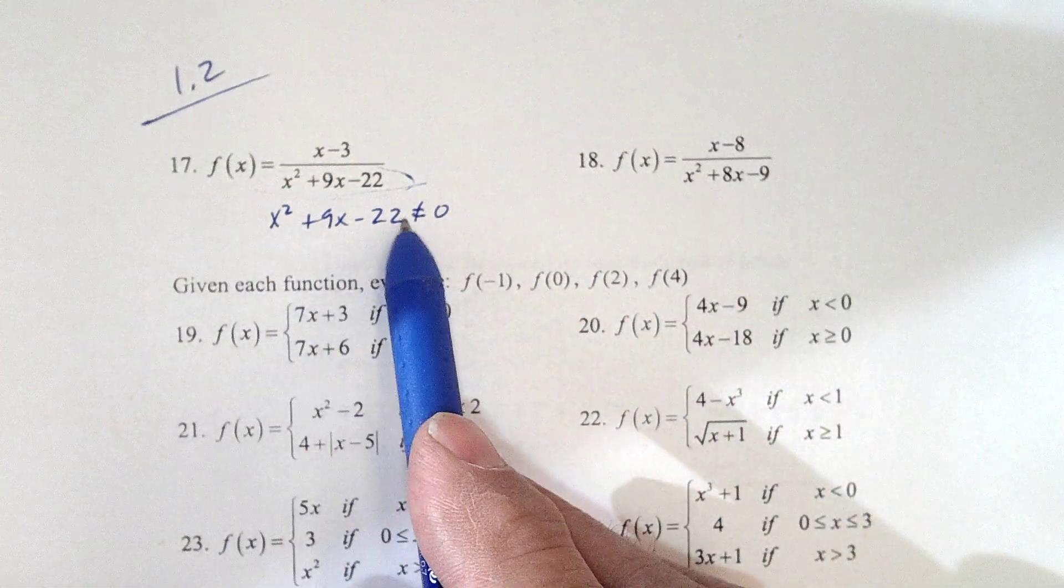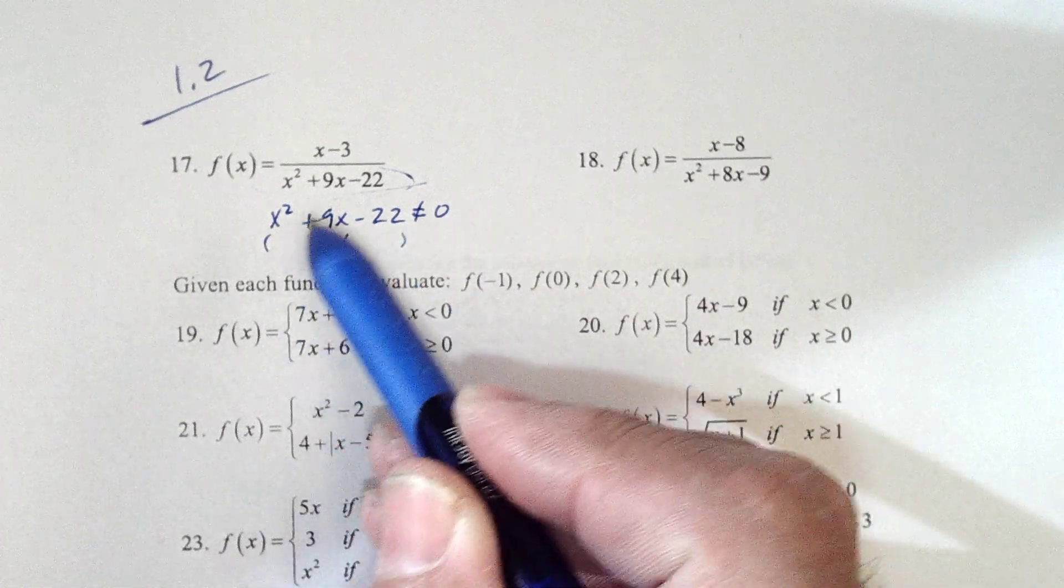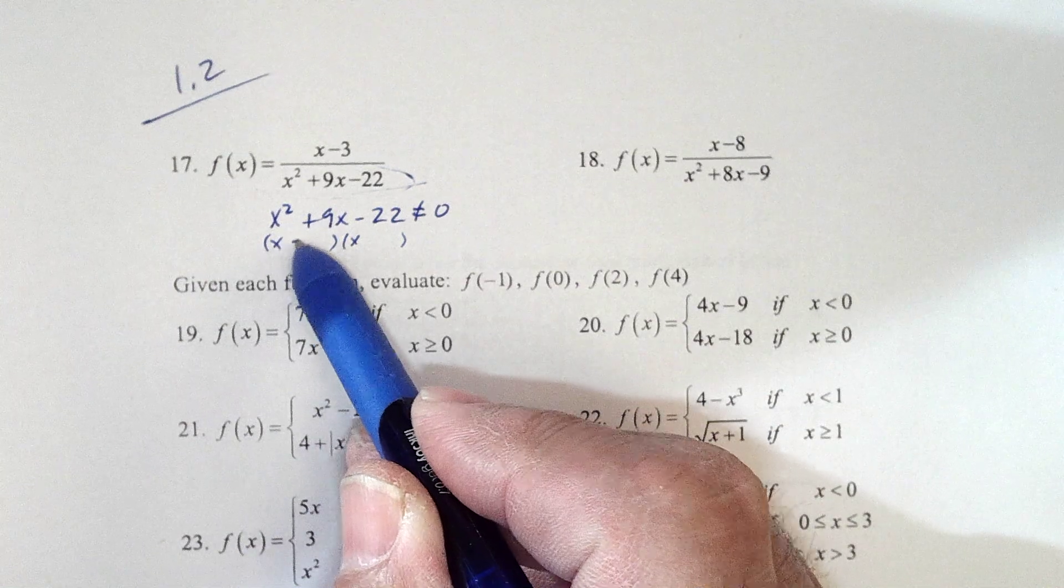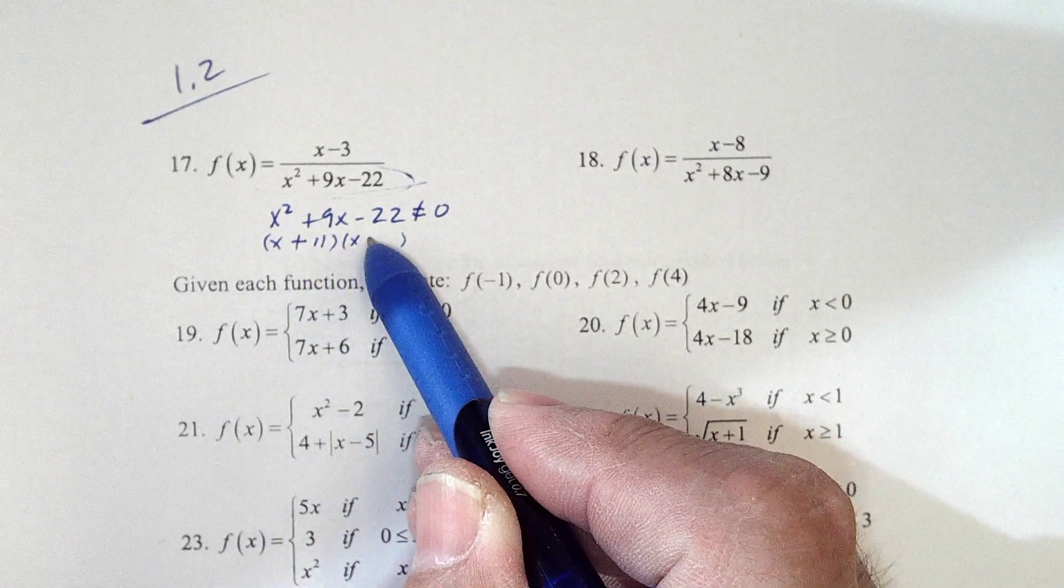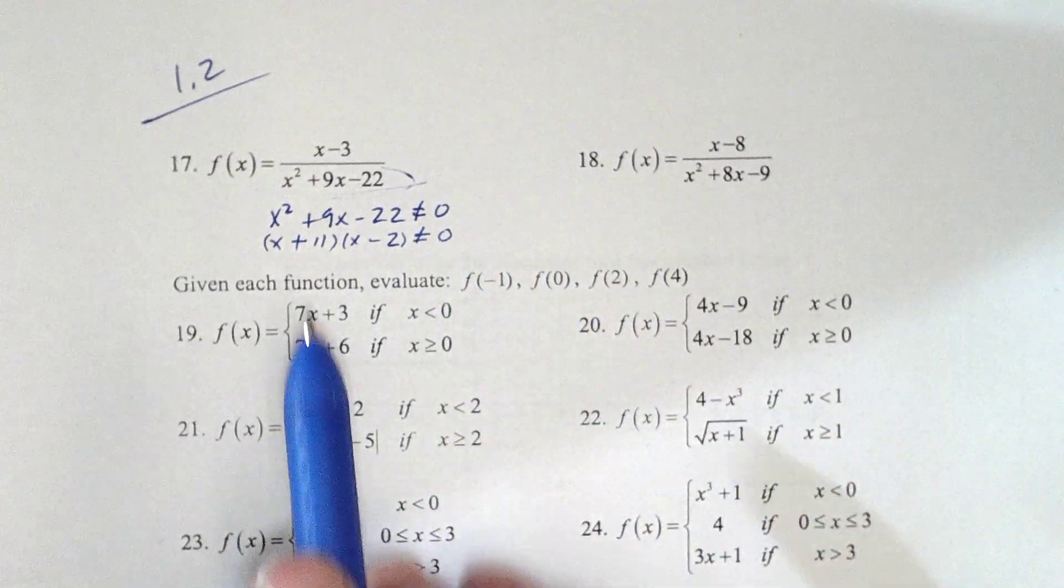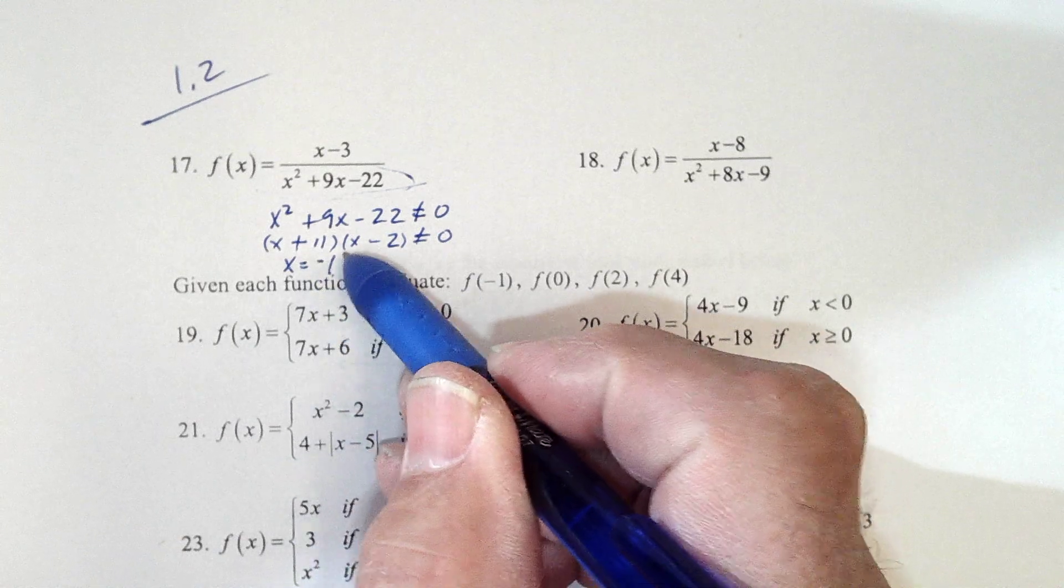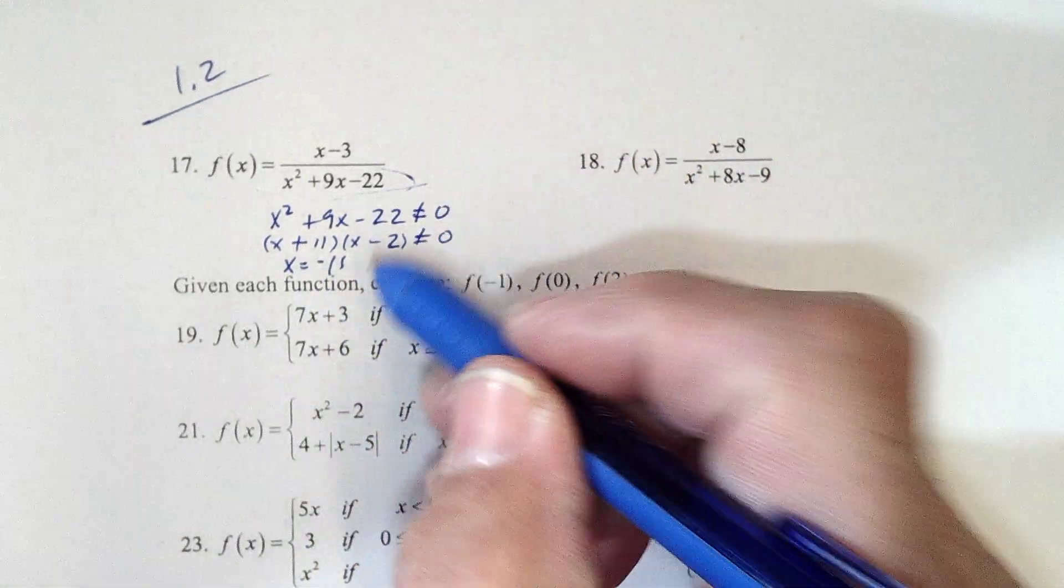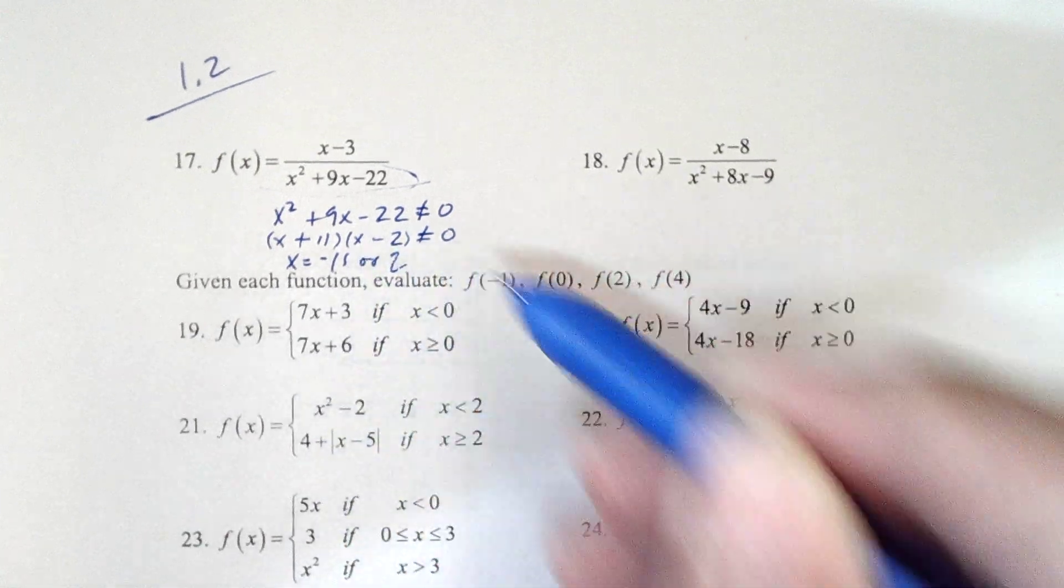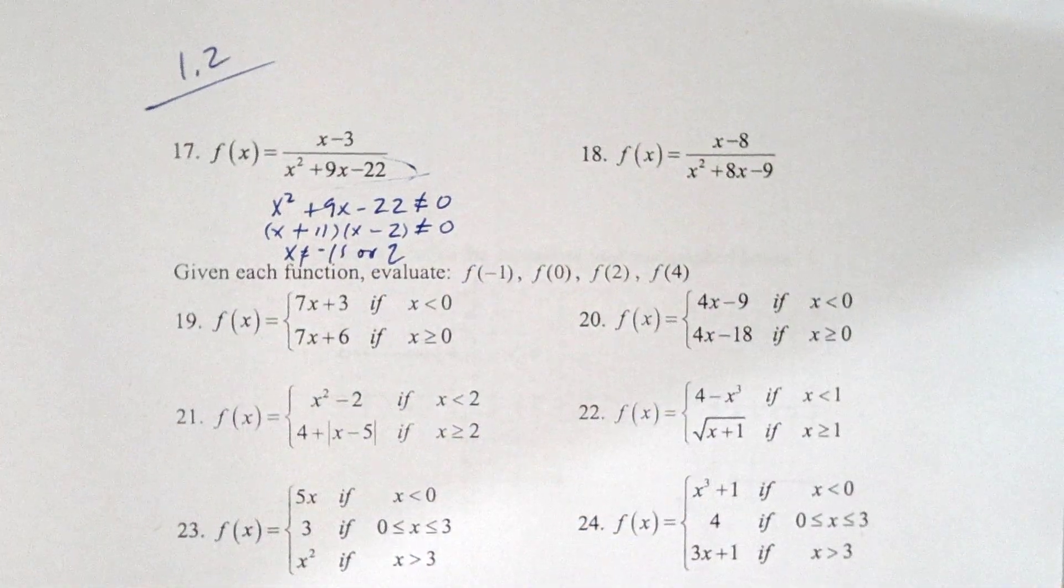So let's find out what makes it 0. If we factor this or use a quadratic formula or graph it, we find out, factoring here, this is plus 11 and minus 2. So what makes it 0 would be negative 11 or positive 2. And that's what x cannot equal.